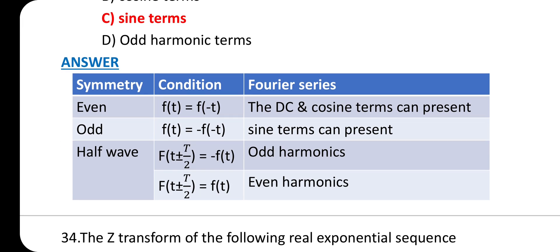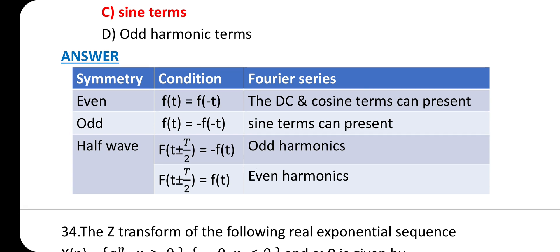Consider the symmetry conditions and Fourier series table. Even symmetry condition: f(t) = f(-t), Fourier series contains DC and cosine terms. Odd symmetry condition: f(t) = -f(-t), sine terms are present. Half wave symmetry: f(t ± T/2) = -f(t) gives odd harmonics; f(t ± T/2) = f(t) gives even harmonics.